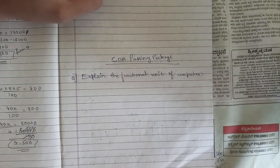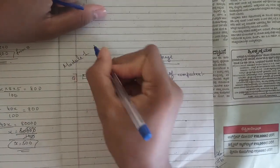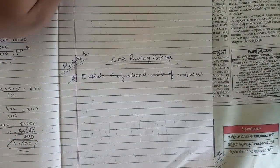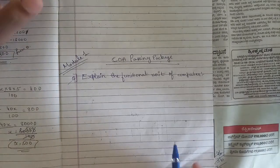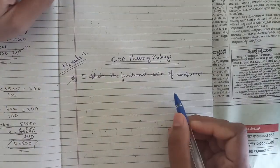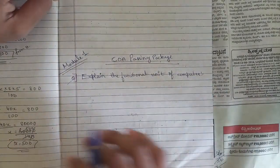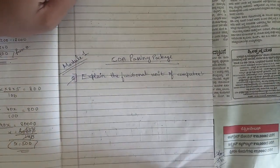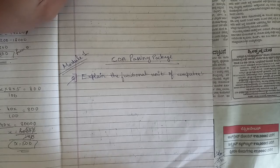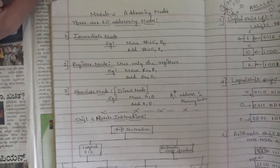From module 1, one fixed question is: explain the functional unit of a computer. For this, you should draw the block diagram showing the memory block, CPU, ALU, input device, and output device, and explain all of them in brief. This question is fixed and has been repeated multiple times in model papers.